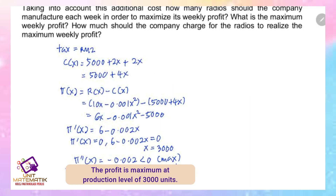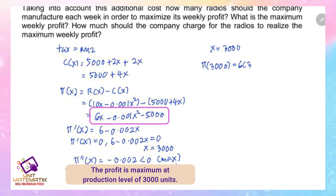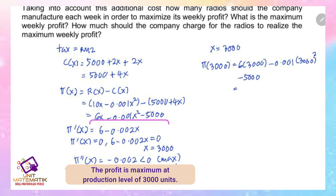Using x = 3000 to find the maximum profit, substitute into the new profit function: π(3000) = 6 × 3000 - 0.001 × 3000² - 5000. The profit when x = 3000 is RM4000. The maximum profit is RM4000.